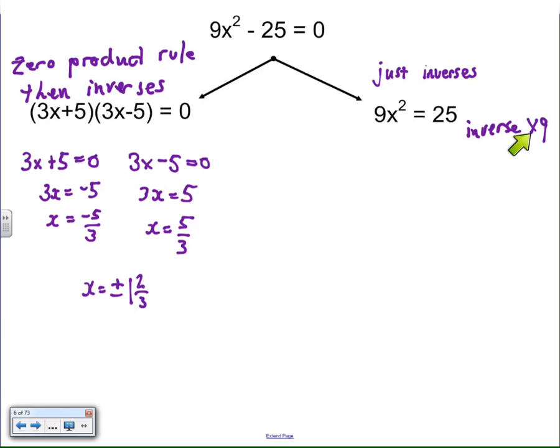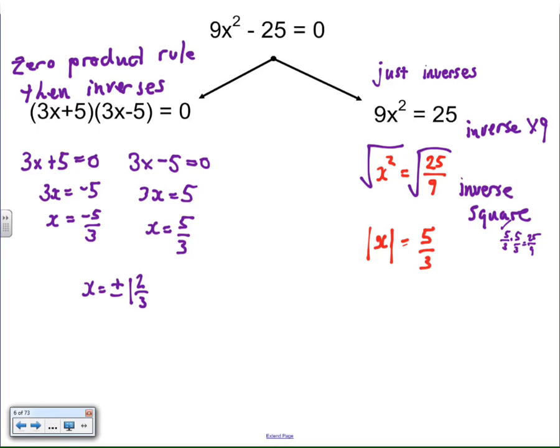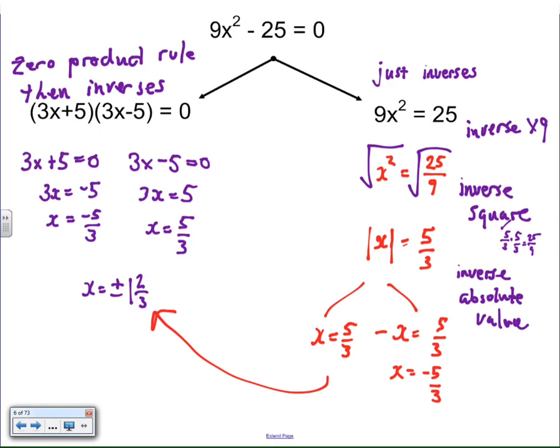We're going to apply the inverse of multiply by 9 to get rid of that 9 on the left side and get x² = 25/9. I'm going to invert square, which is square root, and that's 5/3. And just to be sure, 5/3 is the square root of 25/9. Remember, 5/3 times 5/3 does equal 25/9. So that works. And then we invert the absolute value, giving us both positive and negative situations, and those solutions are consistent with what we did using the zero product rule.